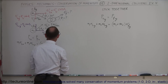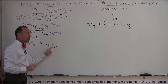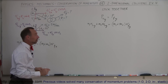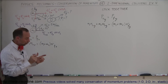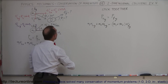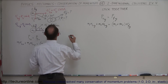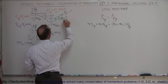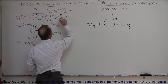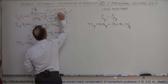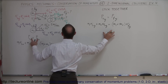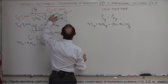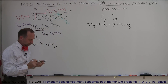The x-direction equation gives us v final in the x direction, and the y-direction equation gives us v final in the y direction. Those are the two components of the final velocity. From those two components we can find v final and the angle.